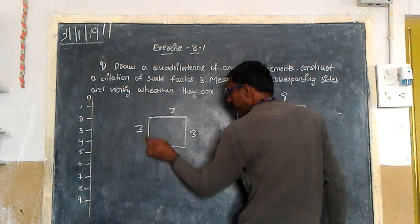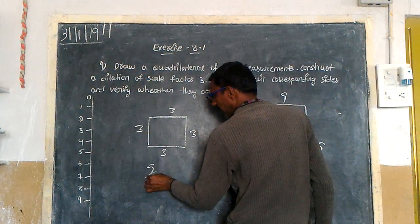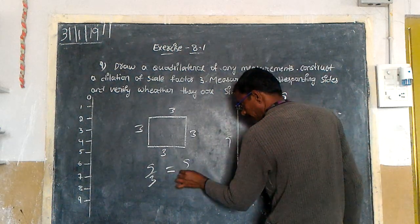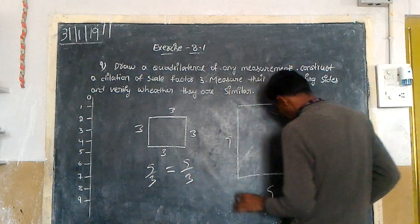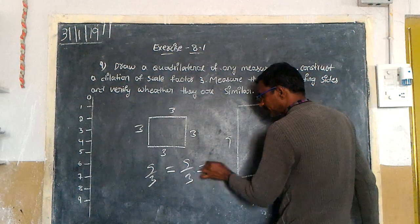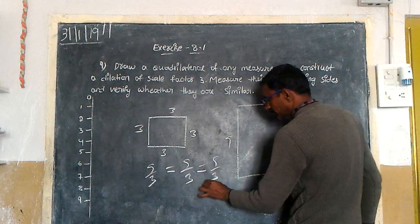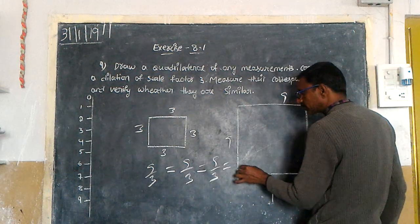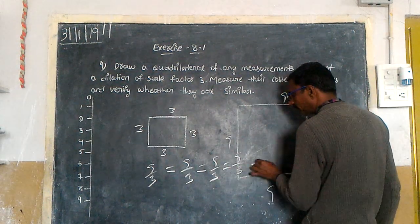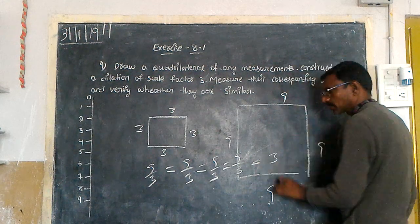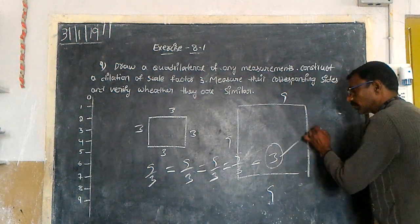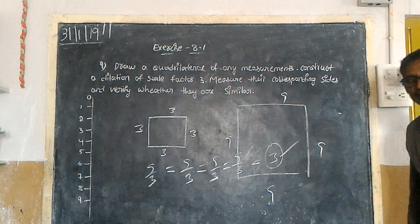This side divided by this side: nine by three. This by this: nine by three. This by this, and this by this — all equal three. This is called scale factor three.